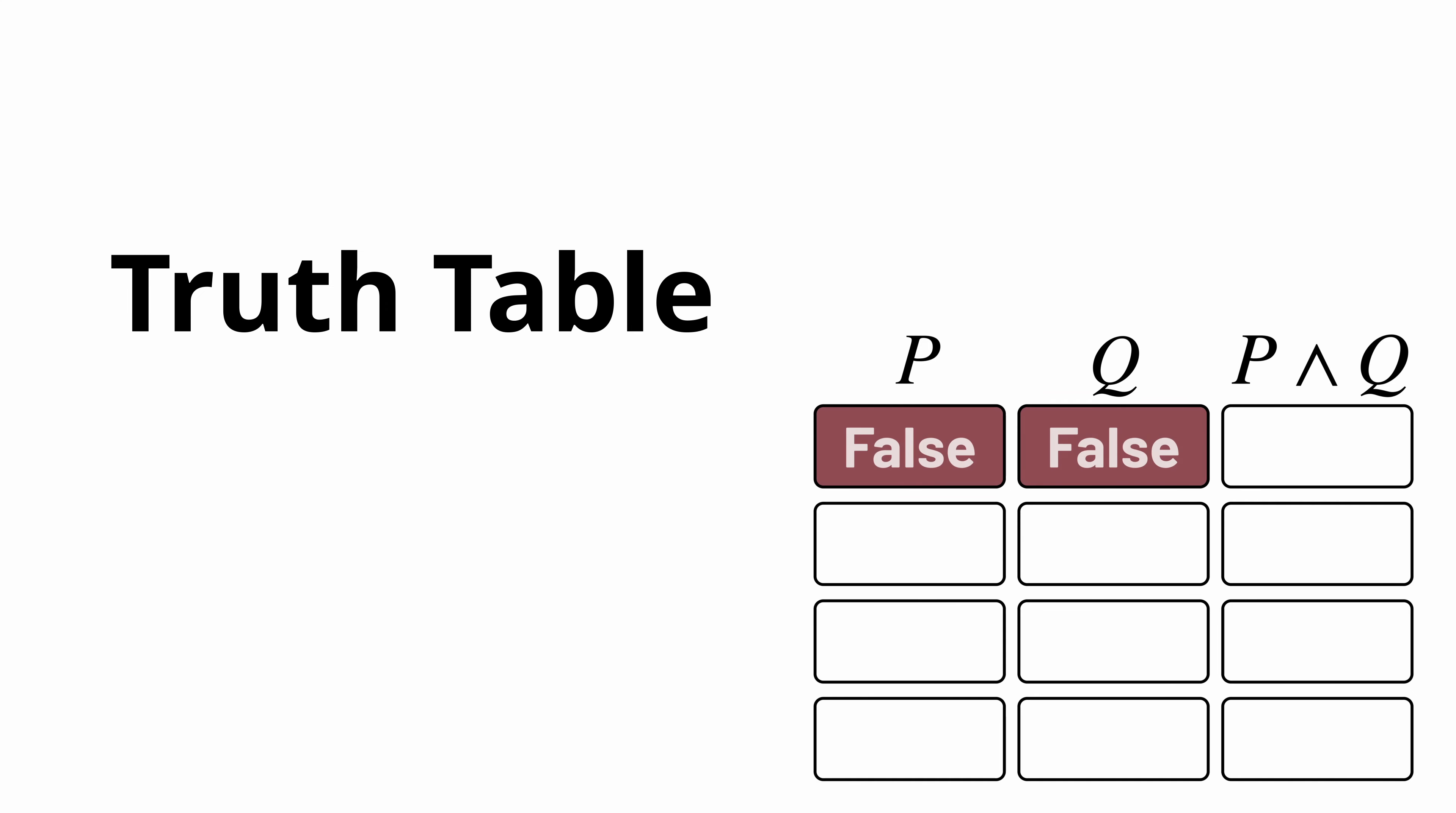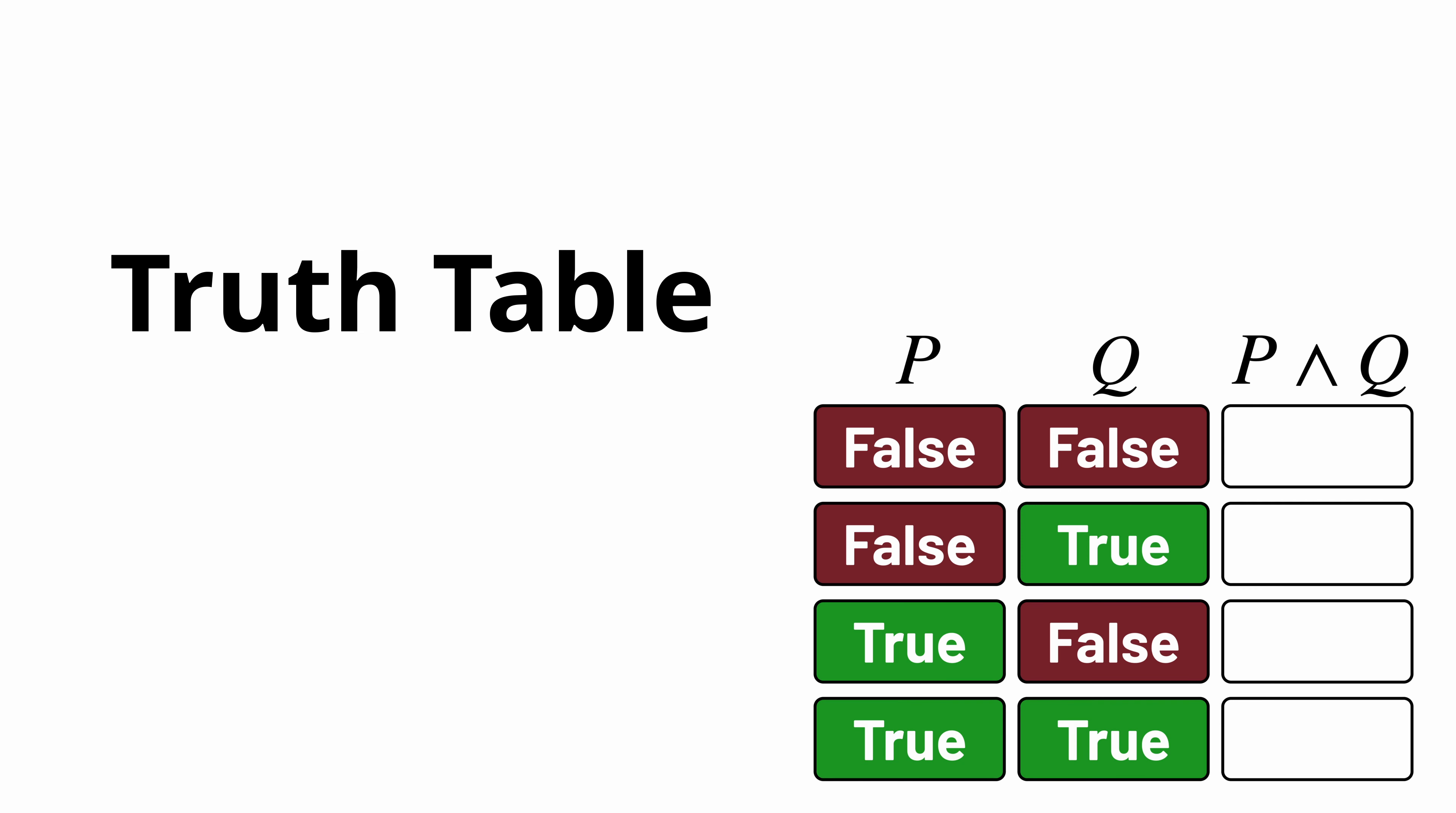They could both be false, P could be false while Q is true, P could be true while Q is false, or both could be true. For the formula P AND Q, there's only one setting of these variables where it holds true. P needs to be true, and Q needs to be true as well. In all other cases, the formula P AND Q is false.